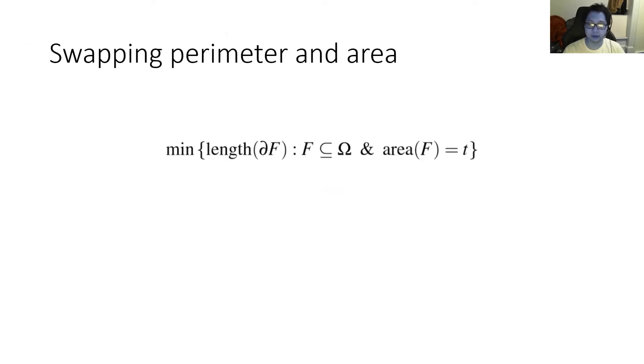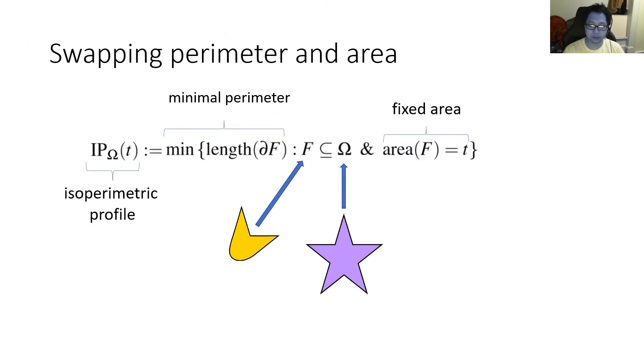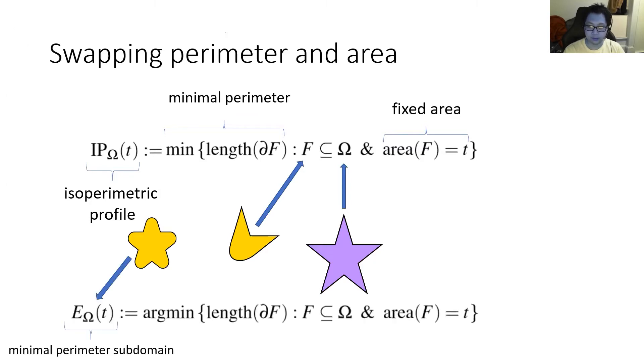To get the isoperimetric profile, we need one more modification, which is to swap the perimeter and area. Now we are looking for the minimal perimeter domain of fixed area that is inscribed in an outer domain. Solving this problem for one fixed area gives you a single point of isoperimetric profile. We will also denote the shape that solves this problem as the minimal perimeter subdomain, E. This is the modern version of Dido's problem and remains the subject of active research. While no modern algorithm is known to solve it, there is recent work that can lower bound it.